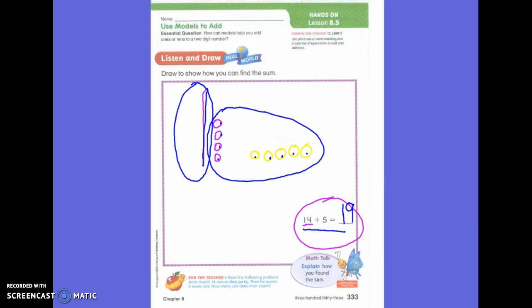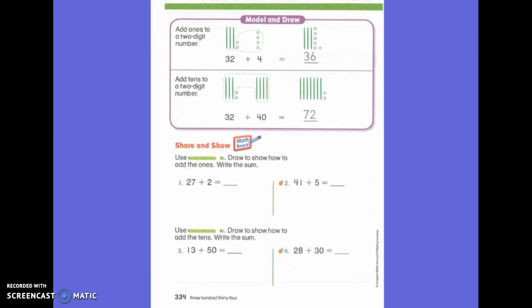I want you to get out your top colorful page and make sure that you are on this front and listen to my story. As I'm writing this story, you can do your quick draw. Amar counts 14 cards as they go by. Then he counts five more cards. How many cards does Amar count? 19. Please write the answer, 19. 14 plus 5 equals 19. Great job.